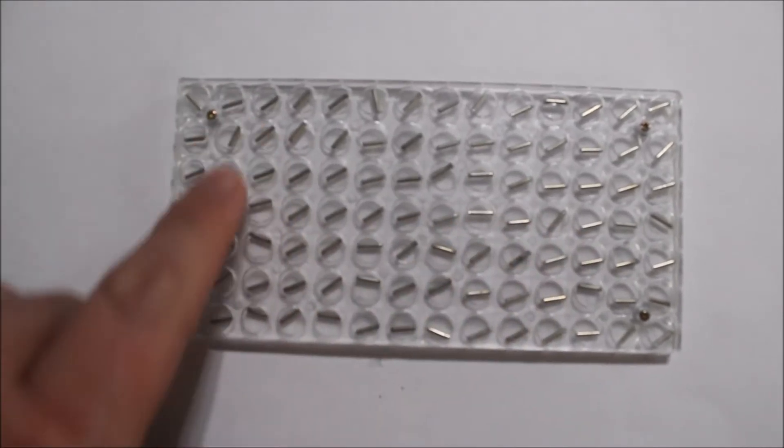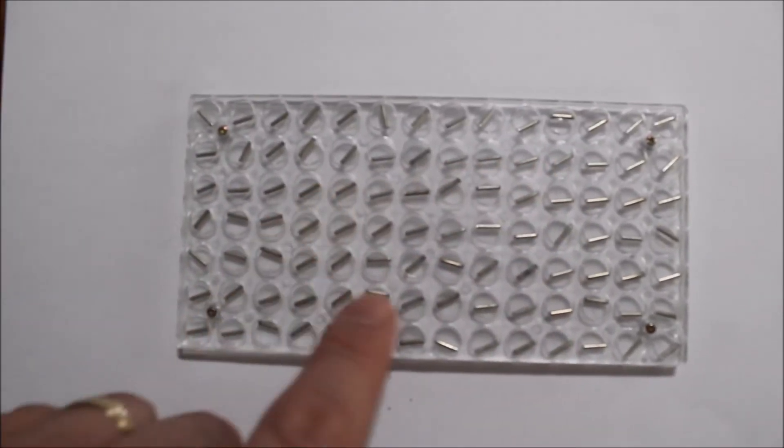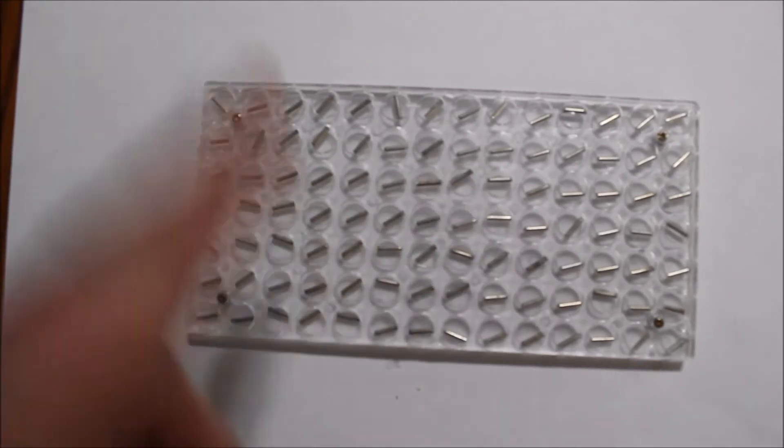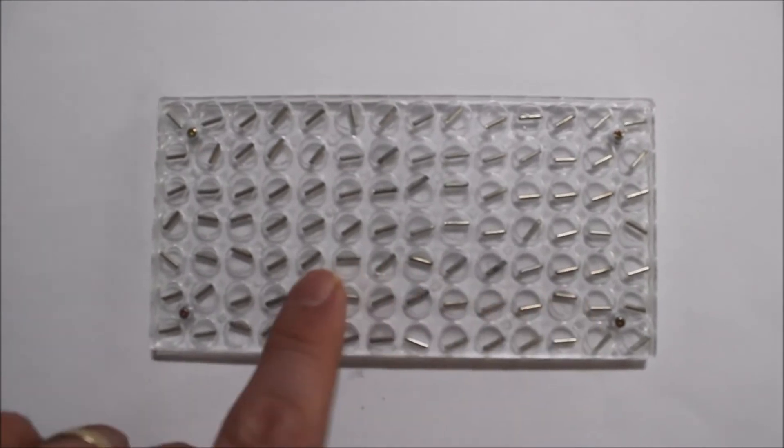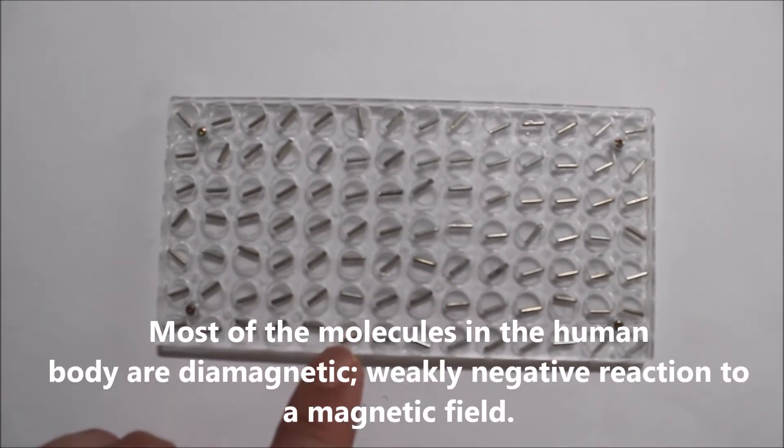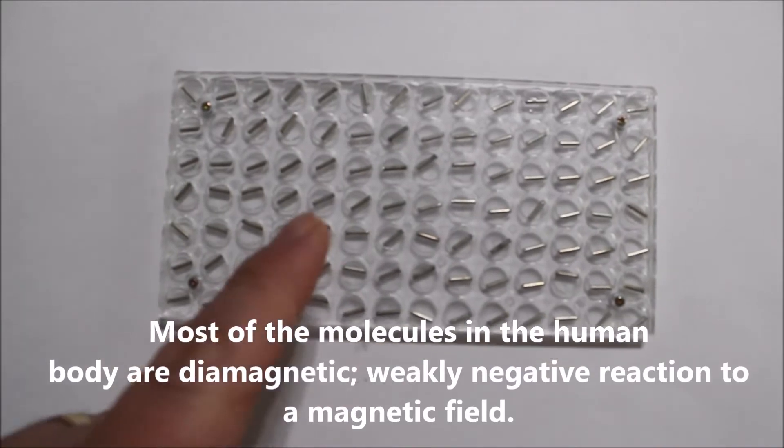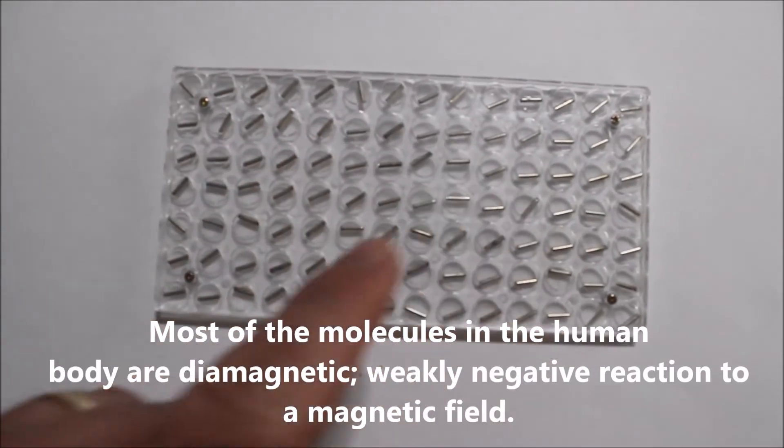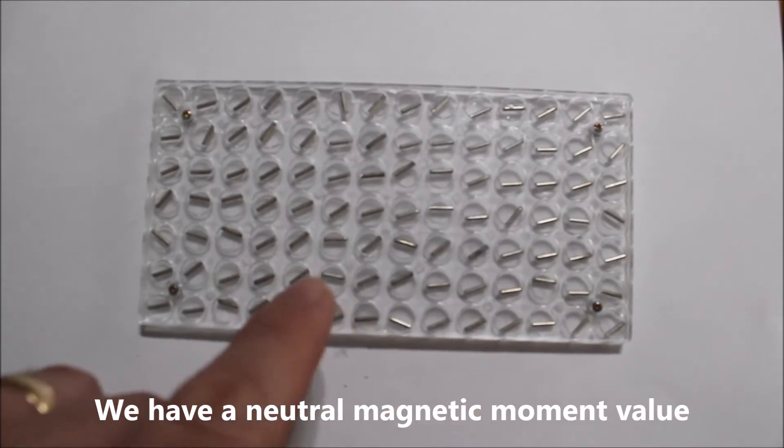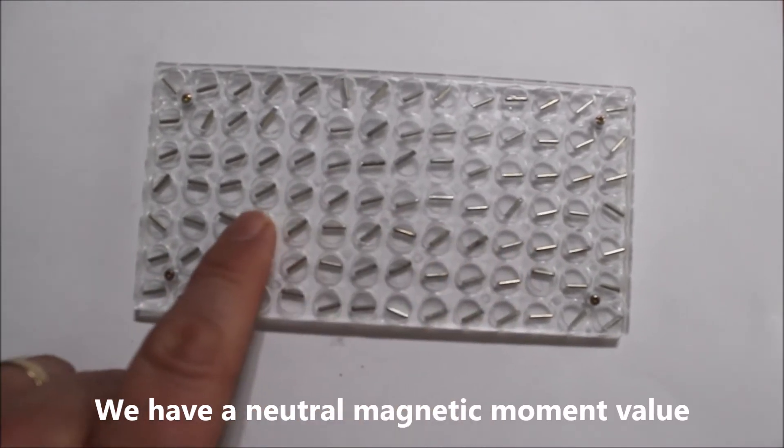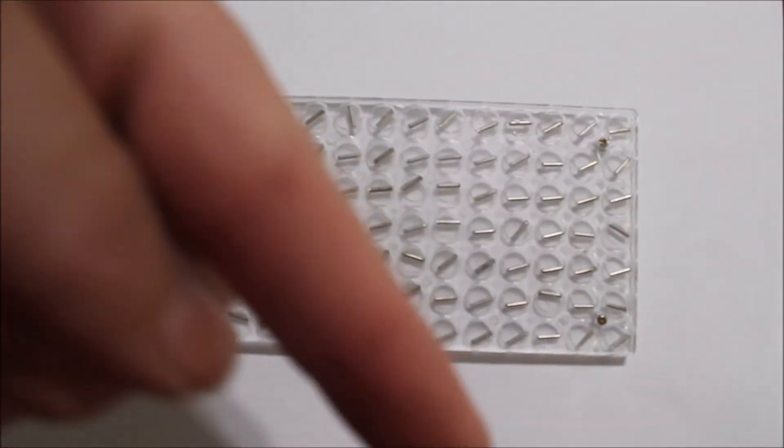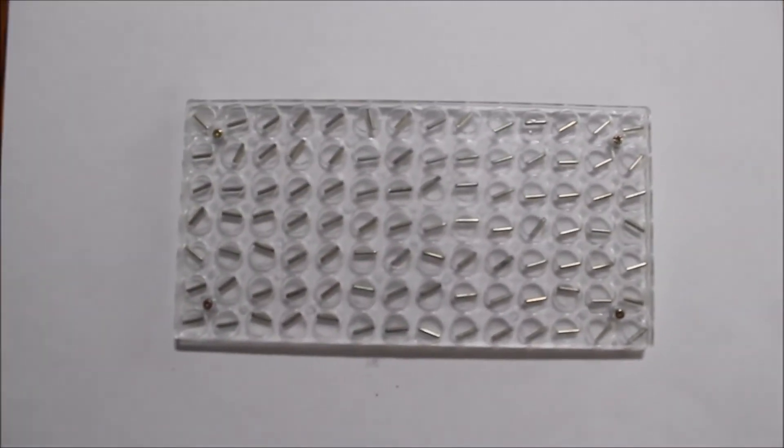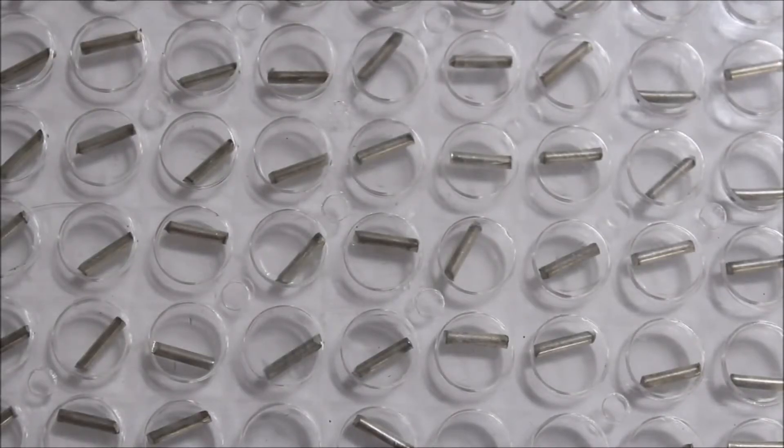So first of all, we notice that all the iron bars here, the steel bars, are in a different orientation. Some are pointing up, some left, right, any obliquity within the system. That's why we are not magnetic when we're walking around, because all these spins or poles are looking in or spinning in a different direction, so everything cancels each other out.